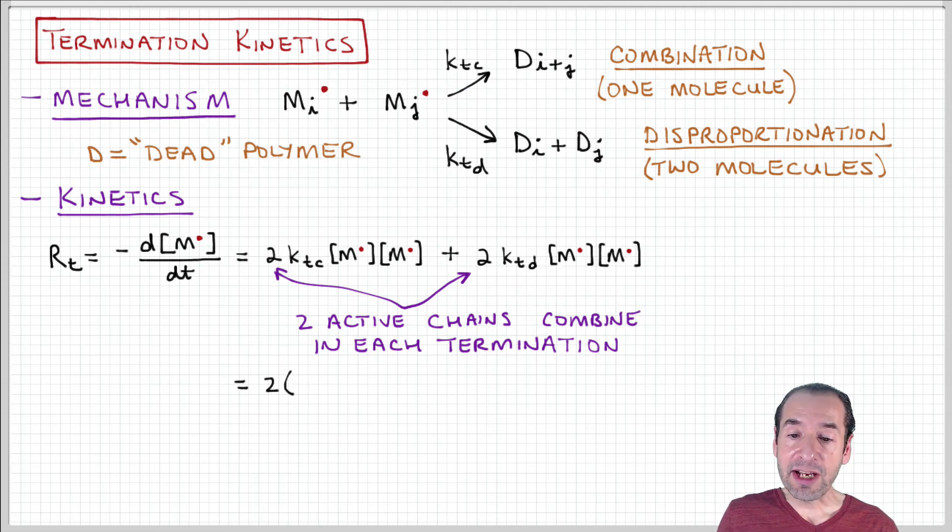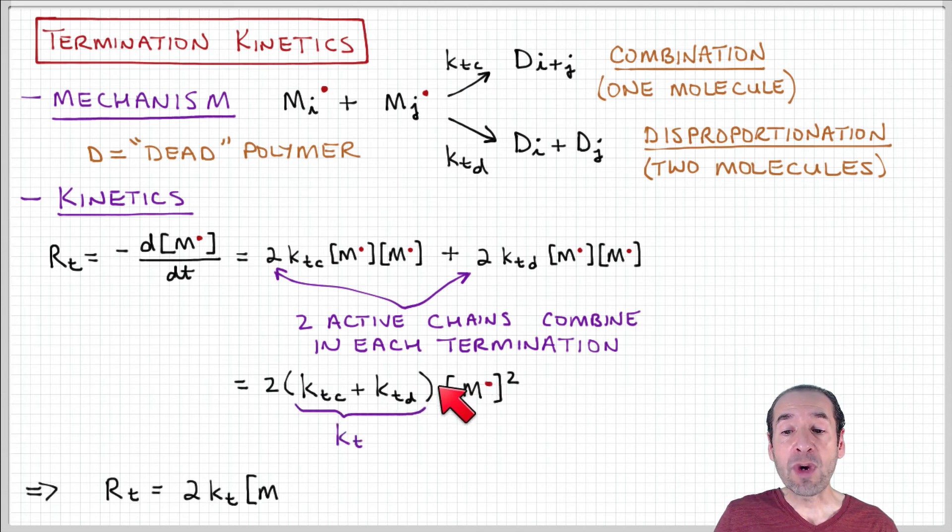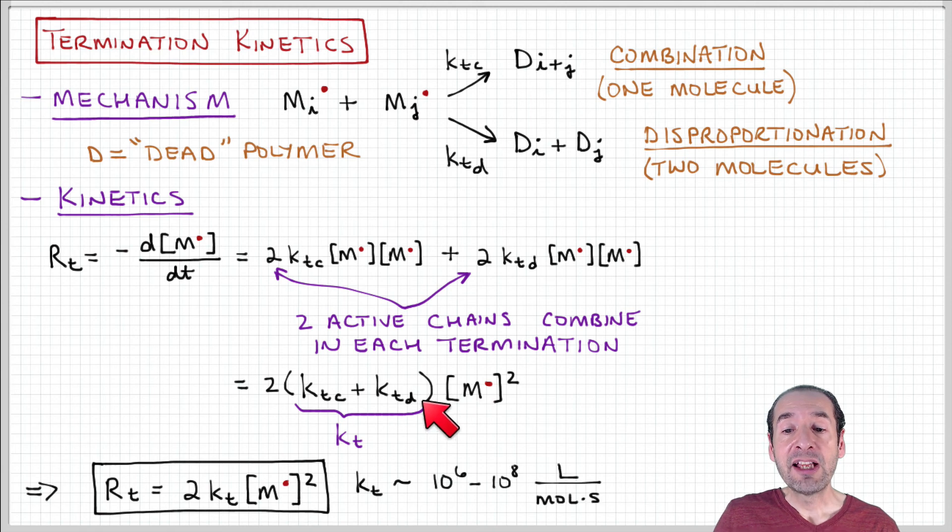We can factor out these rate constants times the square of the total concentration of active chains in the system. By convention, we can combine these two individual rate constants into an overall rate constant associated with the termination process, and then come up with the following rate law.